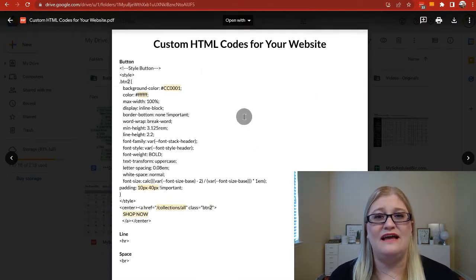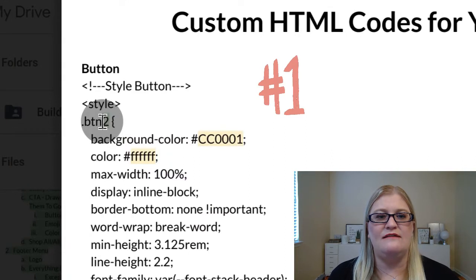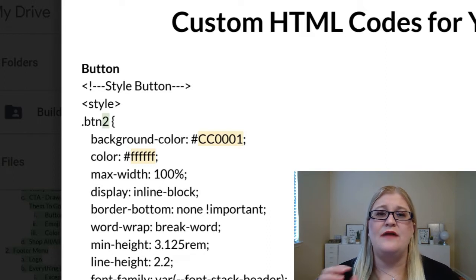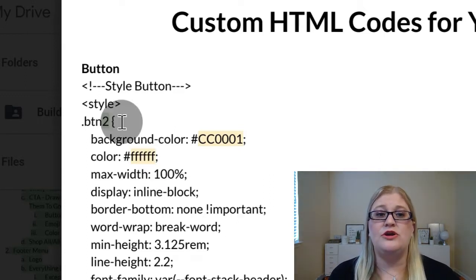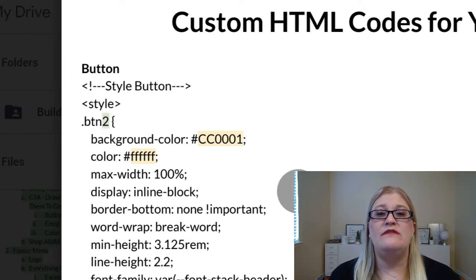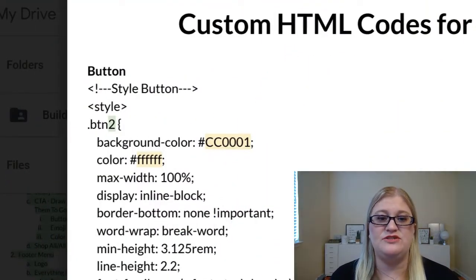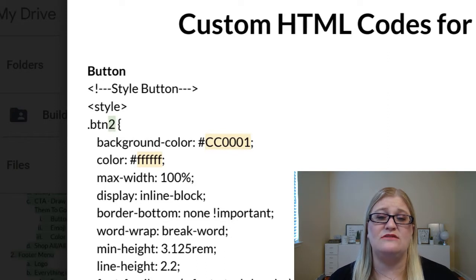Once you get this document, there are two different highlights to pay attention to. The first is the green highlight with a number next to 'button' — you'll need this if you want different colors of buttons. Take the whole section, copy it, and paste it into the HTML section. The first one you do, call it button two; if you do another one, make it three, four, five, and so on. We don't call it button one because button one already exists on your Shopify site. So you can have multiple buttons that all look the same without needing a separate section.